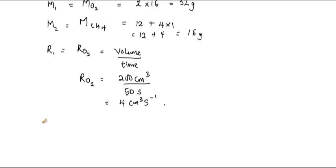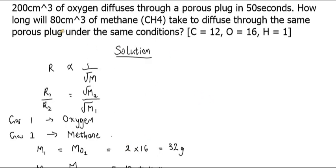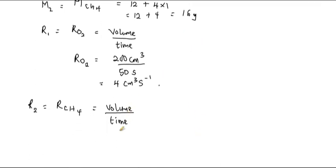Now for the second gas, methane: r(CH₄), following the same procedure as for oxygen. From the question, 80 centimeter cubes of methane diffuses through the same porous plug under the same conditions in an unknown time — that's what we are being asked to calculate. Since the time t is unknown, we cannot calculate the rate of diffusion of methane directly, so r(CH₄) remains unknown.